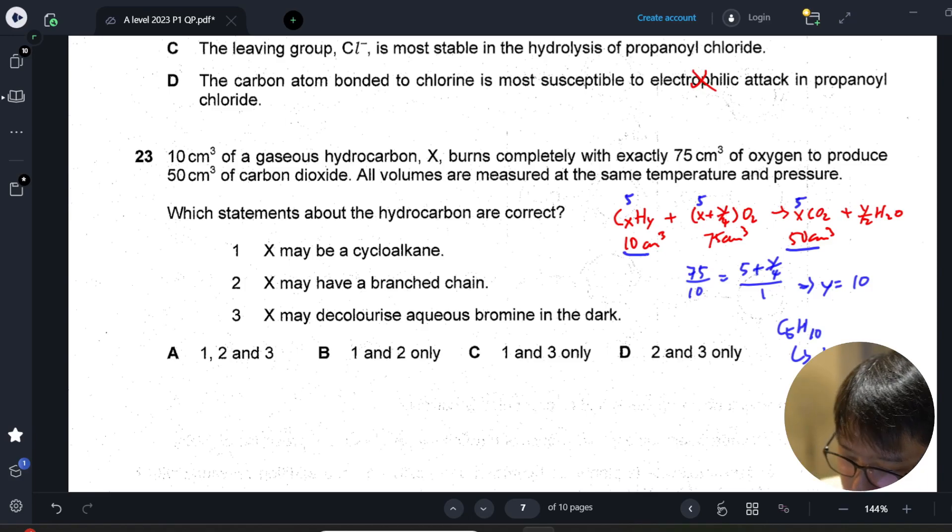So it may be a cyclic, it may also have a C=C double bond which will decolorize aqueous bromine. It may have a branched chain, yes, may or may not, but that doesn't really affect the Mr.